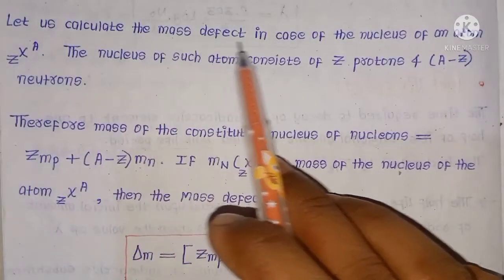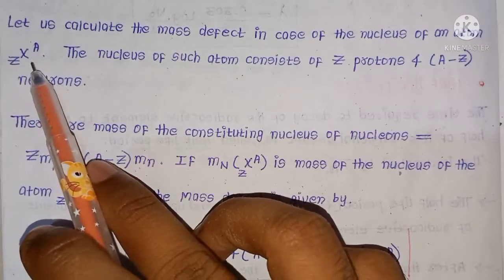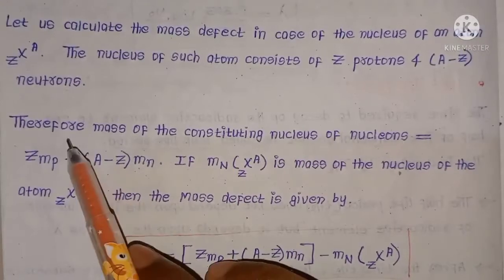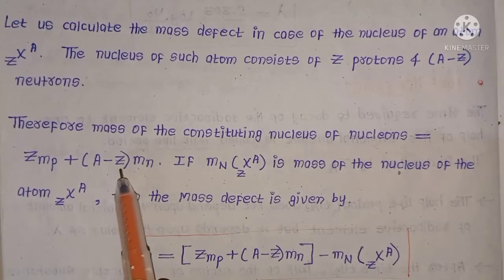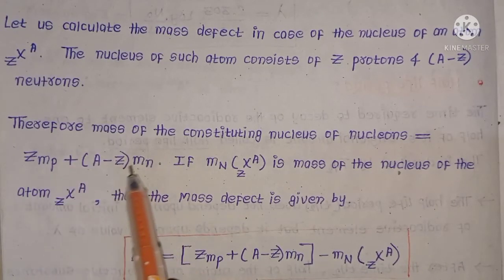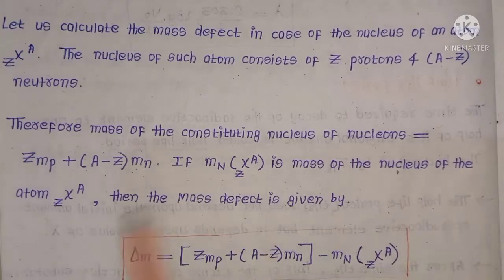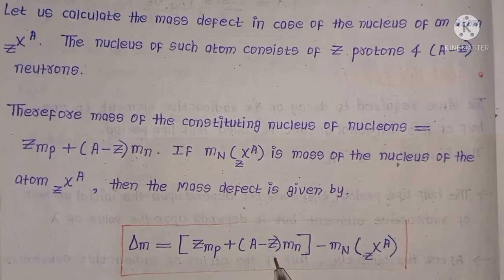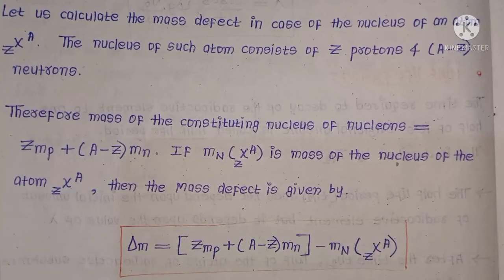Consider the mass defect for the nucleus of an atom X with atomic number Z and mass number A, where A is the total number of protons and neutrons. The total mass of the constituent nucleons equals Z·mp plus (A − Z)·mn. If mn(X, Z, A) is the rest mass of the nucleus, then the mass defect is: Δm = [Z·mp + (A − Z)·mn] − mn(X, Z, A). This is the general representation of mass defect.